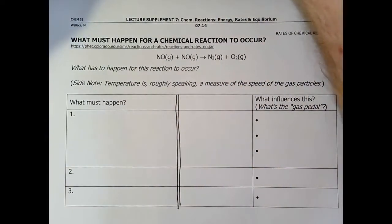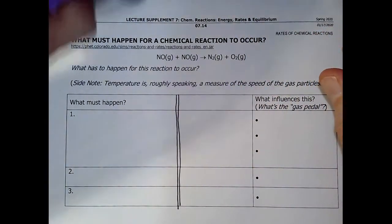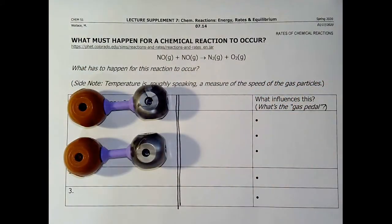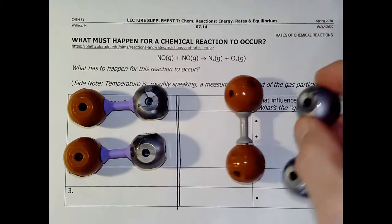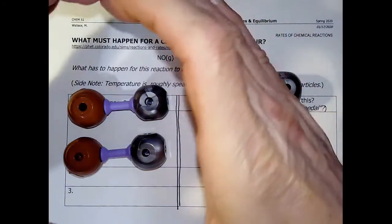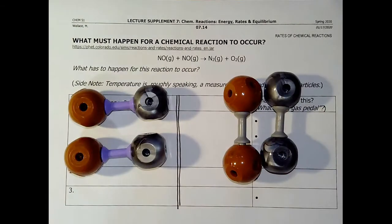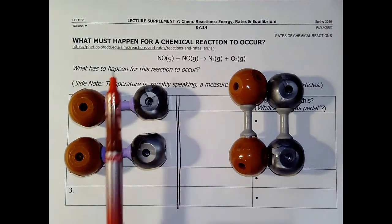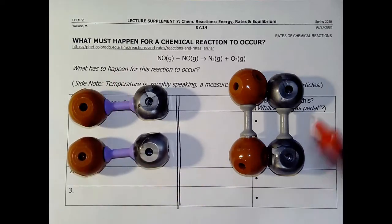So what I want to think about is if I had some container, here's my nitrogen oxides, and I wanted these to react to produce this. Imagine I have those in some container. What has to happen? Well, we know before, these bonds have to break and these bonds are going to form. And so we can do that math now and figure that out.